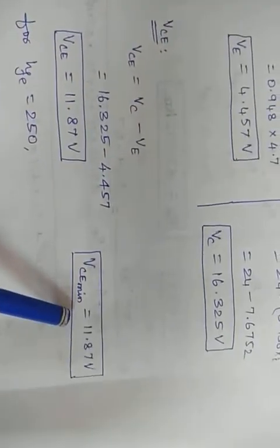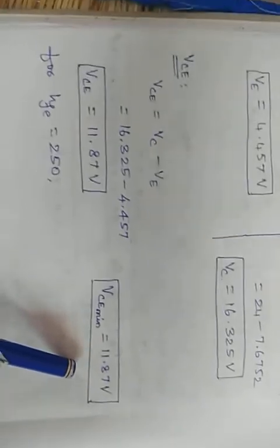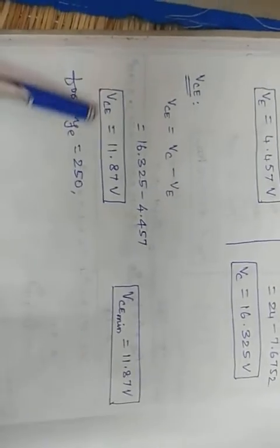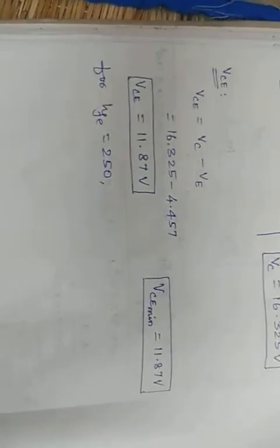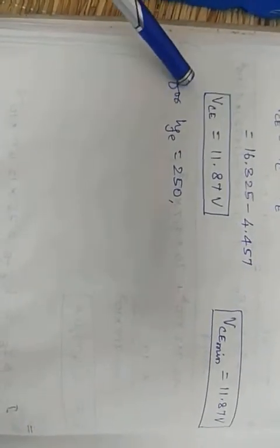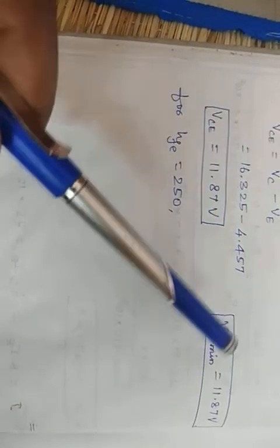So the minimum VCE value has been derived. As homework, calculate the maximum VCE value by taking HFE = 250. Thank you.